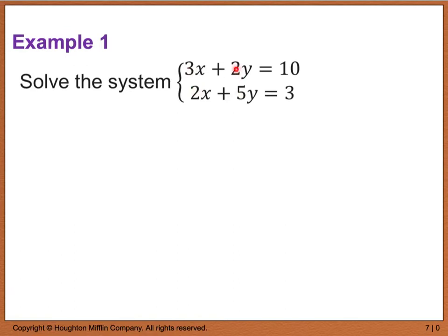That's why substitution might not necessarily be the easiest method to use because it is going to involve fractions. If we use the elimination method, we're going to pick one variable - I'm going to use the variable x, and we want to get both of those variables the same. In this case, I am going to multiply this line here by 2 and this line here by a negative 3 so they can have the same x coefficients. When I do that, we end up with 6x plus 4y equals 20, and a negative 6x minus 15y equals a negative 9.